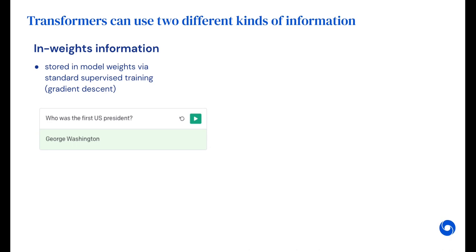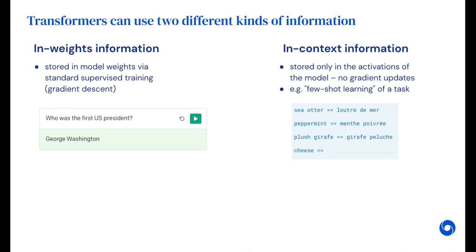and in-context information, which is provided only in context at inference time and is stored only in the activations of the model. For example, language models are known to perform few-shot learning of a task from context.